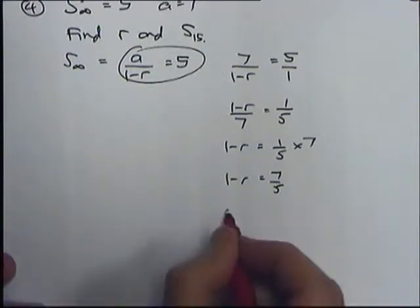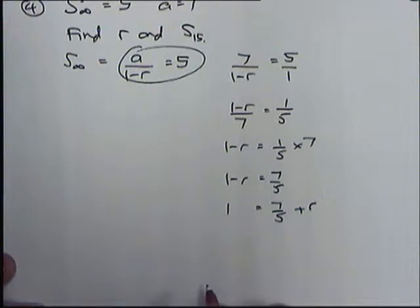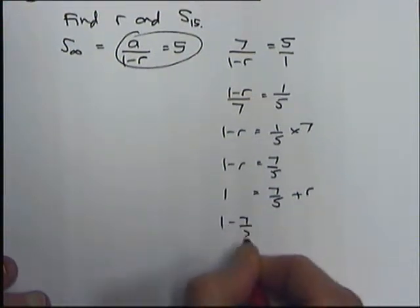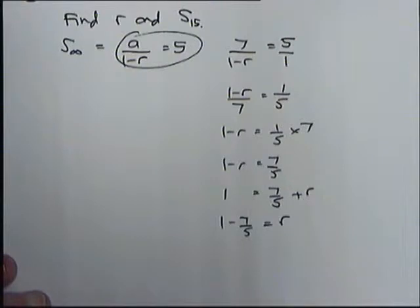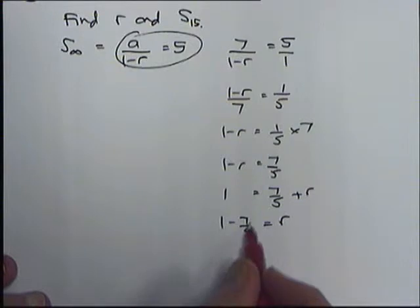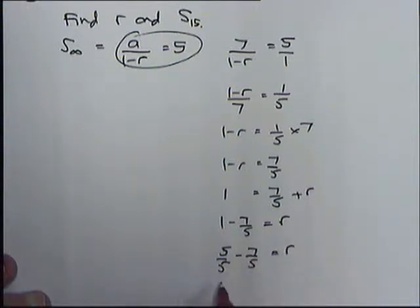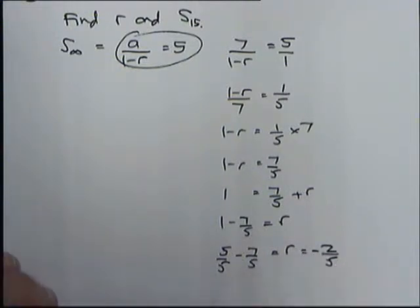Now I can add r to both sides, and I can take 7 fifths away from both sides. I have r on its own as the subject, and I have 1 minus 7 fifths. Well, 1 is the same as 5 fifths. So 5 fifths take away 7 fifths gives r equals minus 2 fifths. So I found out r, which was my first task — r is minus 2 fifths.